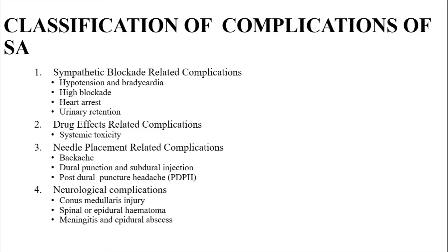This is the category of complications according to how they occur. First, we have sympathetic blockade-related complications, where we have hypotension and bradycardia, high spinal blockade, cardiac arrest, and urinary retention.